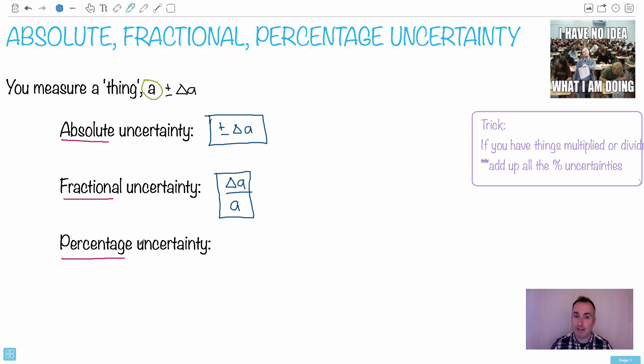Now the percentage uncertainty is just like the fractional uncertainty except you multiply by a hundred. That's it. So in this case, we have delta A over A times 100, and that's how we find the percentage uncertainty.